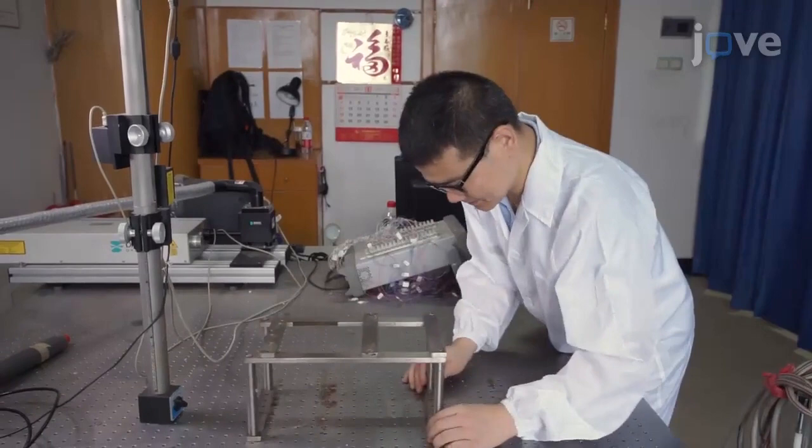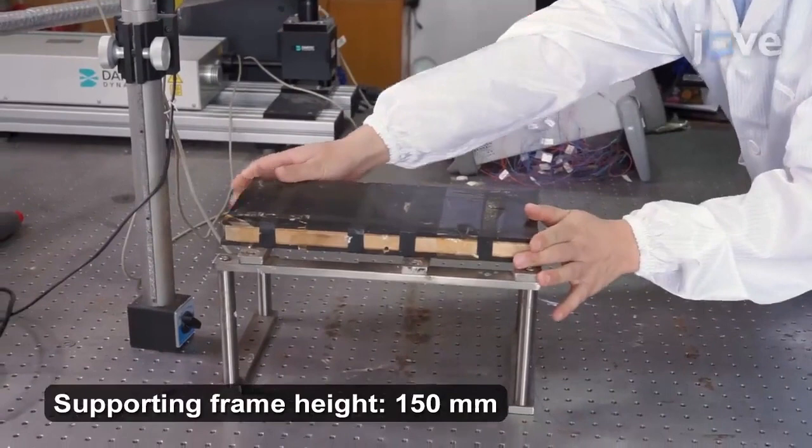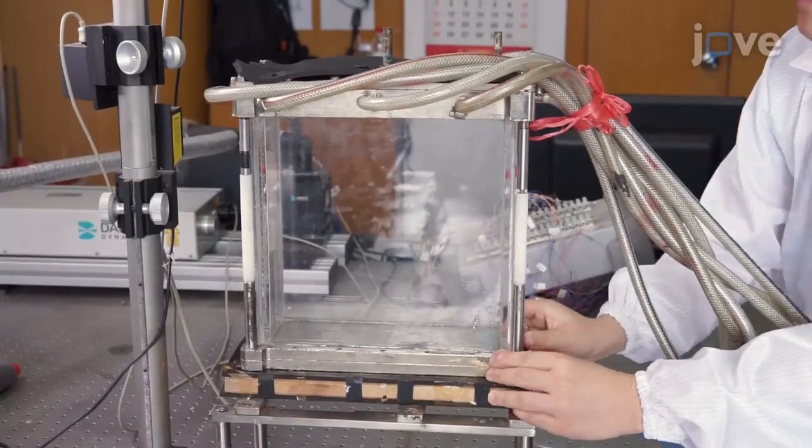At an optical table, set up a stainless steel supporting frame. On top of the frame, place an insulating slab. With everything in place, place the assembled tank on the slab.